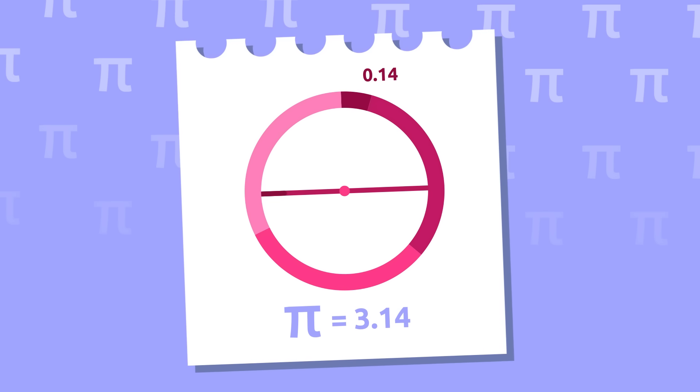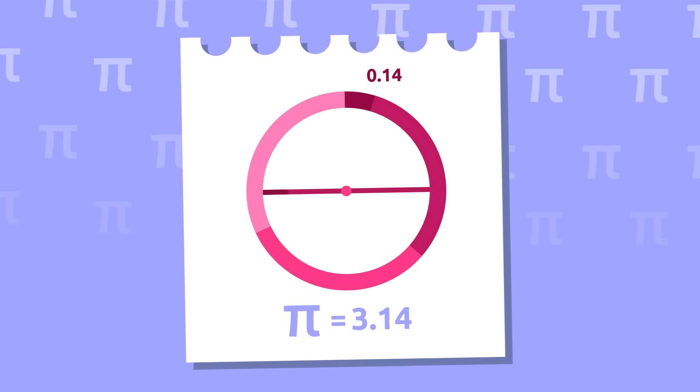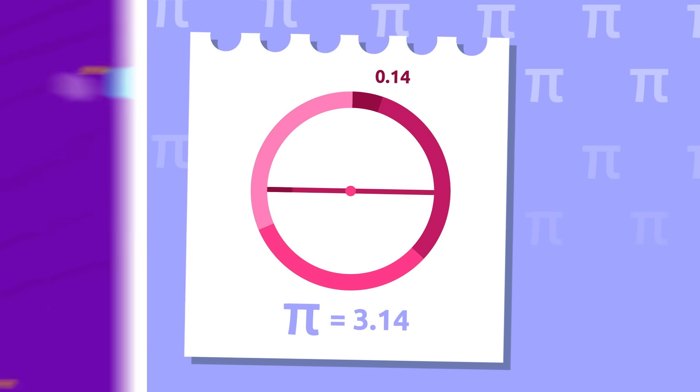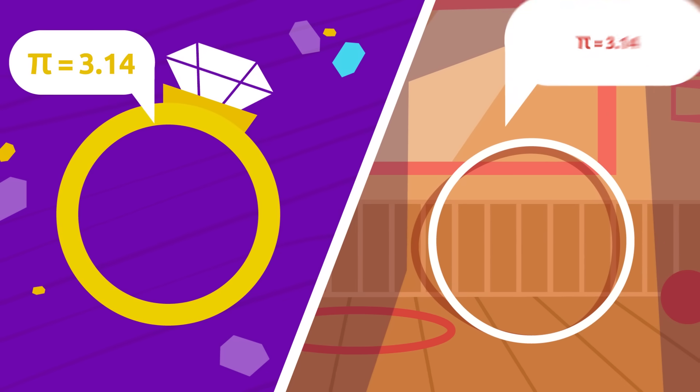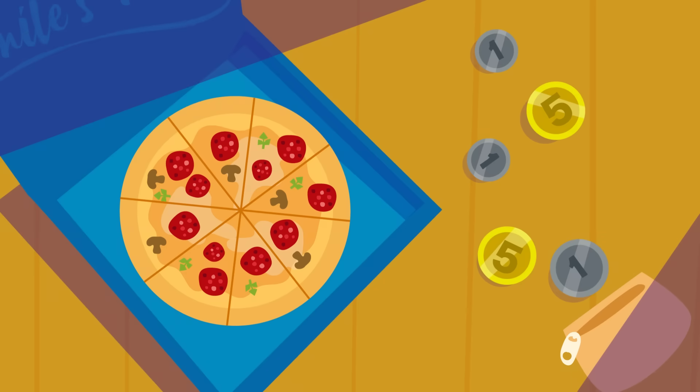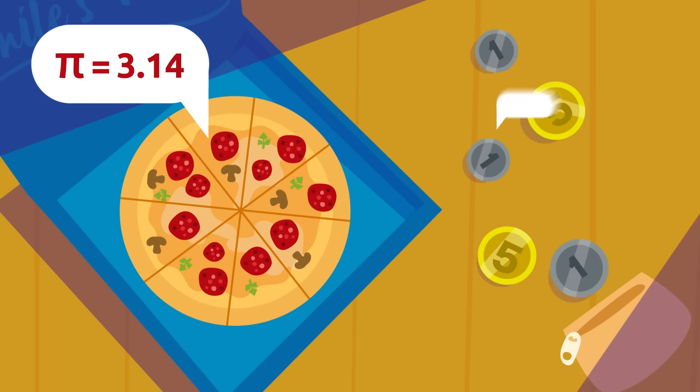That's why we know that pi equals 3.14. We say that it's a constant because number pi is the same for every circumference in the world. In other words, this number is always equal to 3.14.